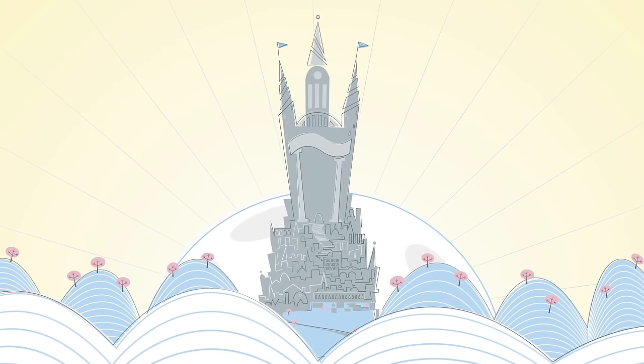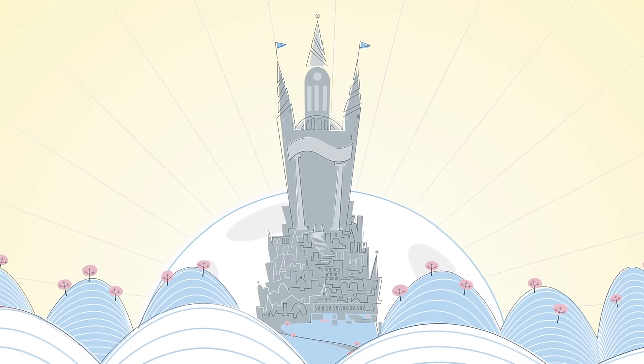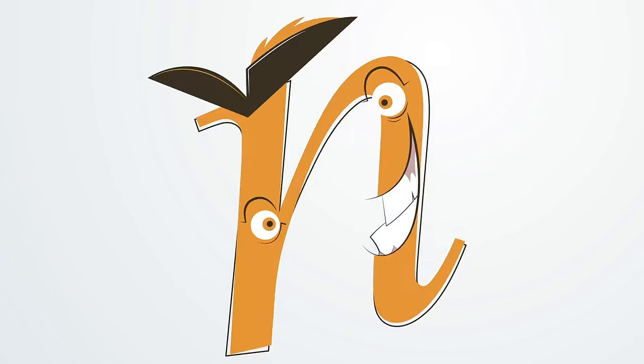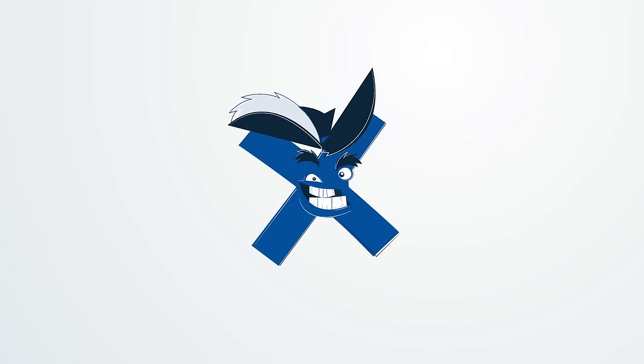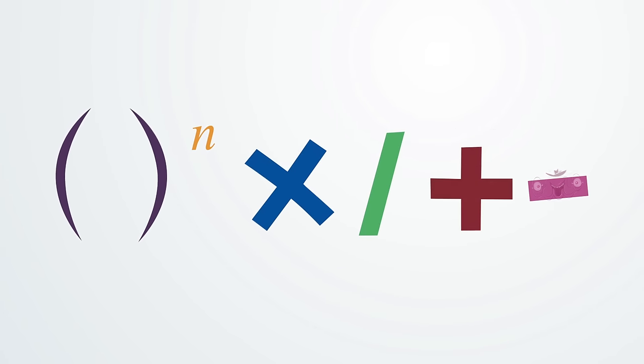Once upon a time, in the magical and very round land of Pi, there lived six swashbuckling musketeers. Their names were parentheses, exponents, multiplication, division, addition, and subtraction, but each was known best by his or her mark.